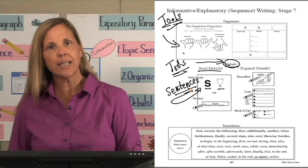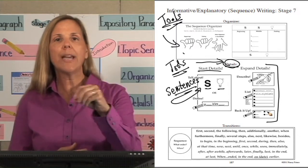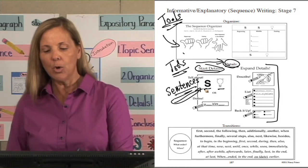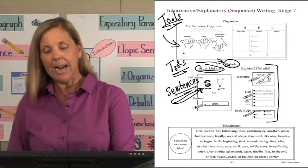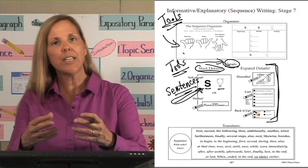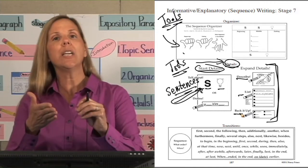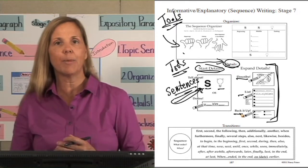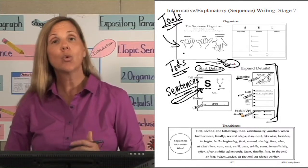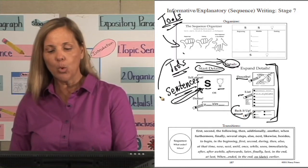As students form sentences from their ideas, they will then expand. They draw or write key words for each detail in the body of their organizer, use the start details tool to form a complete sentence, then use the expand details tool to decide if more is needed. Do we need to describe, list, or back it up? Does the reader need to visualize this information? Do we need to tell more—why, how, what else, when, where? Or do we need an example? These are our tools for details.